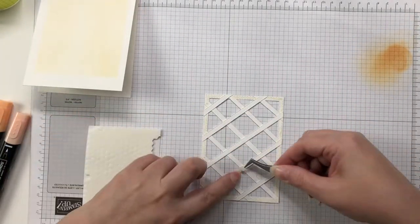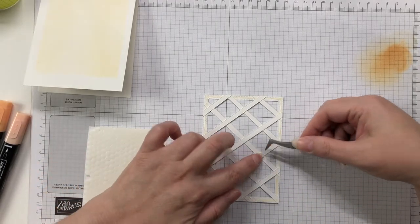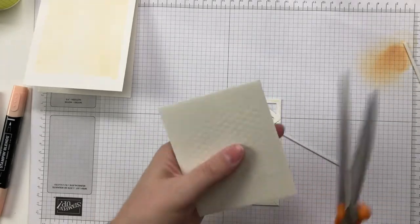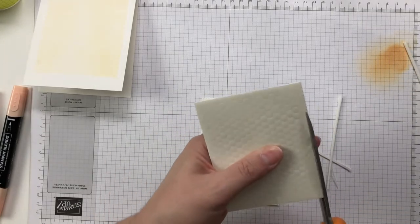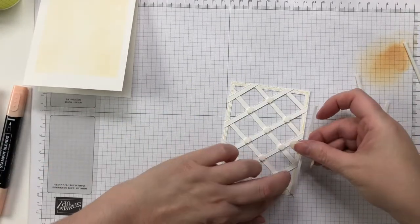Now you could obviously just adhere this panel straight onto your cardstock, but I decided to pop it up, so I went through and just added lots and lots of dimensionals and I also cut strips just to sort of make it easier to stick it down.